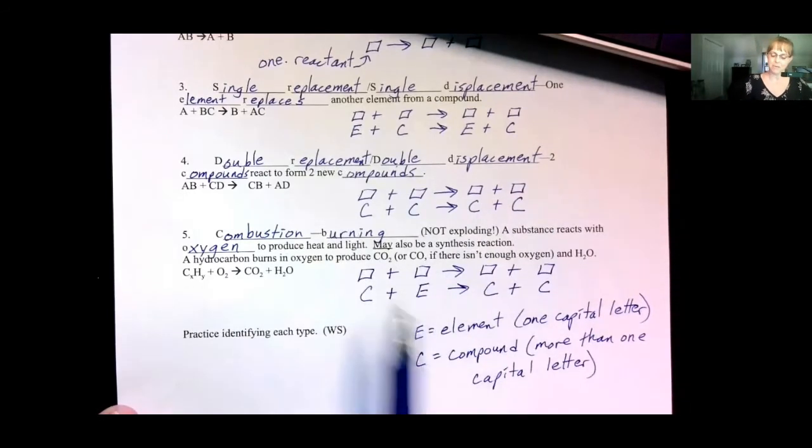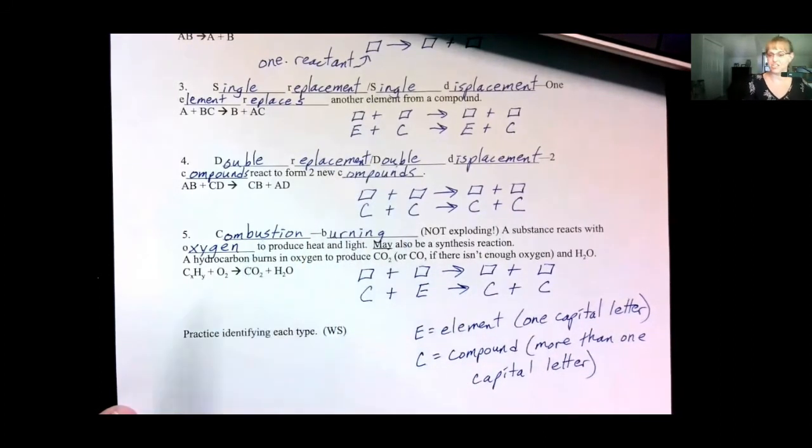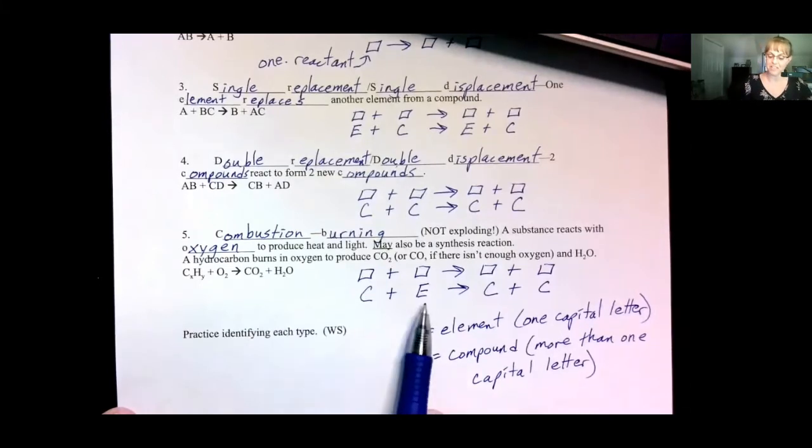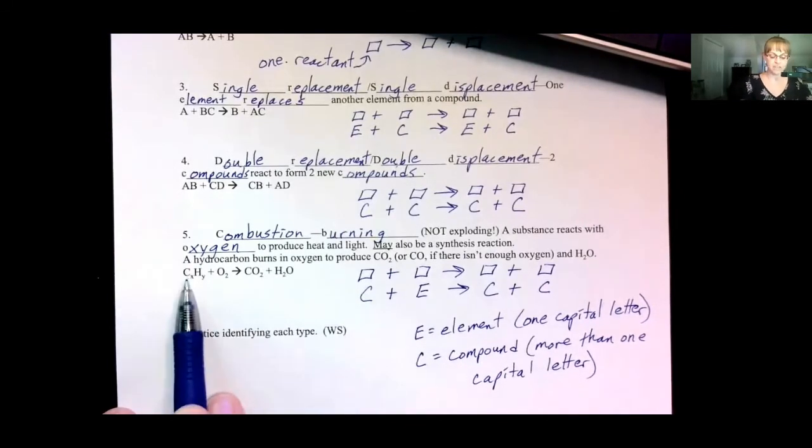Now if you see a compound and an element on one side and you see a compound and a compound on the other side, then which one is it? Is it single or double? It's not. It's combustion. Combustion means burning, not exploding. A lot of people think that when something combusts, it explodes, and sometimes some things do, but not everything. So combustion only means that it catches fire and burns. What do you have to have to have a fire? You have to have oxygen, right? And therefore the element will always be oxygen.